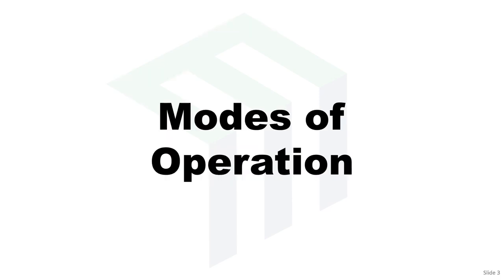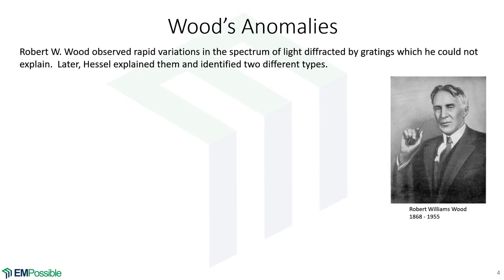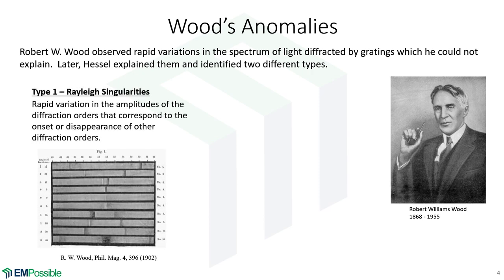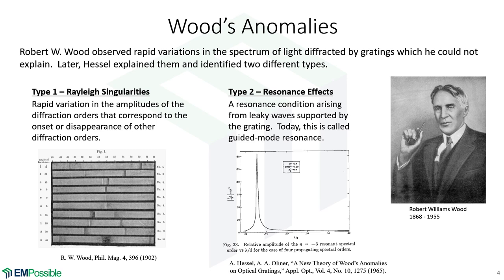Historically, Dr. Wood published a paper and made some observations that really could not be explained at the time. He observed very rapid variations in the intensity of certain colors of light as he was changing angle of incidence. Later, Hessel came in and explained what was going on. Wood defined two types of singularities: Type 1 and Type 2. Type 1, Lord Rayleigh observed many years ago — as you change color, the wavelength changes, and at some point new diffracted modes appear and there's a rapid redistribution of power amongst all the different diffraction orders.